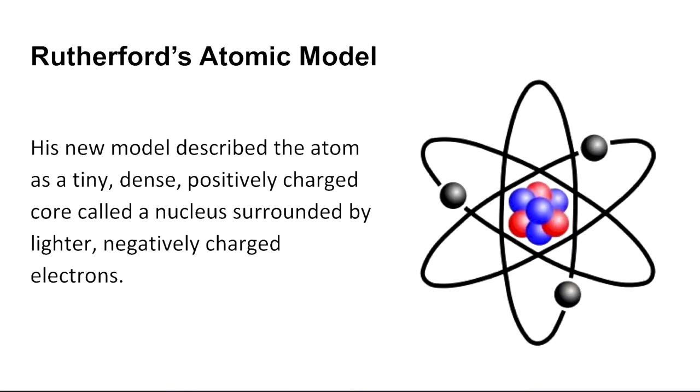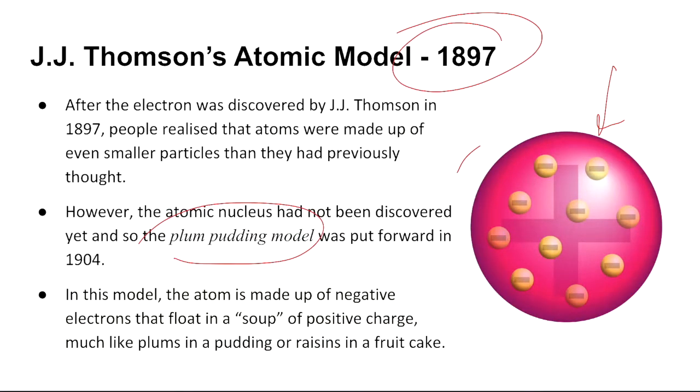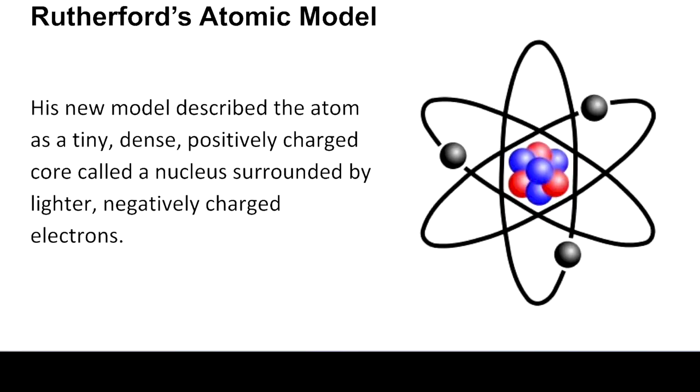Now the Rutherford's atomic model. And if you look at this diagram here, very similar to the scene changes in Big Bang Theory. His new model described the atom as a tiny, dense, positively charged core called a nucleus surrounded by lighter, negatively charged electrons. All of a sudden, from this model here to all of a sudden what's in here, the positive soup and the negative electrons floating around in that soup, to eventually pretty much all the protons in the center and electrons just floating around aimlessly around the nucleus.